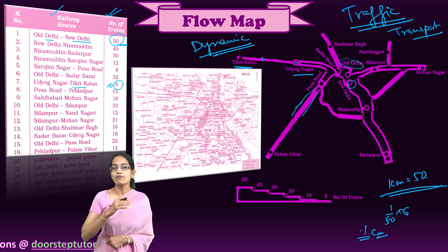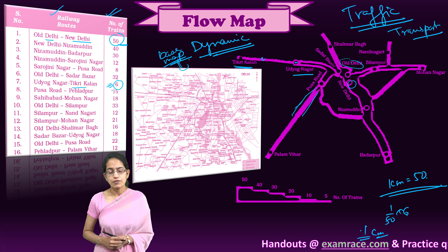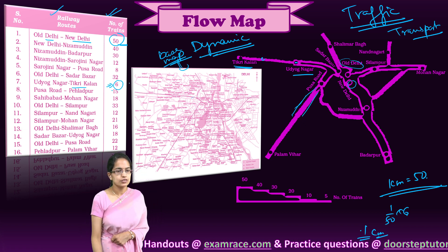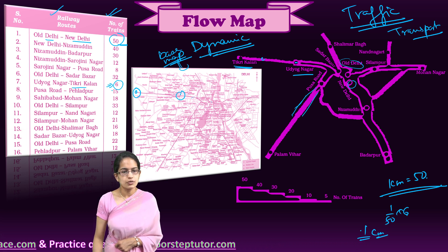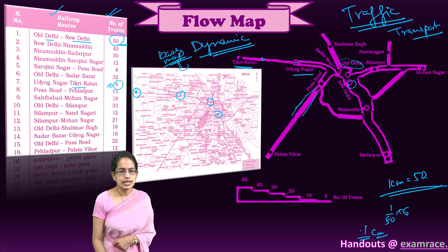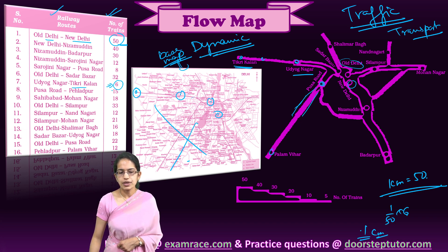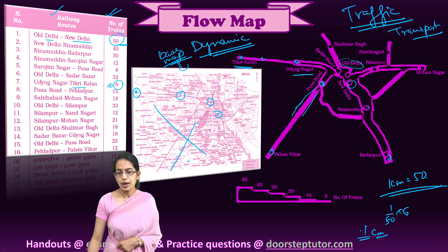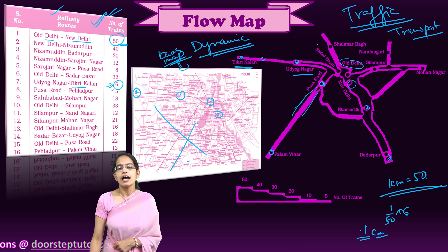To understand flow, we first need a base map. Using the base map, we identify the locations — Tikri Kalan, Udhyognagar, Old Delhi, and New Delhi railway station. Rather than using the whole map, we pick only the important individual locations and mark them on a separate map at the same scale.